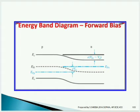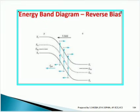The reverse bias condition energy band diagram is also shown here. In reverse bias condition, there will be no conduction of current, and the electric field is very minimal, as seen in the diagram.